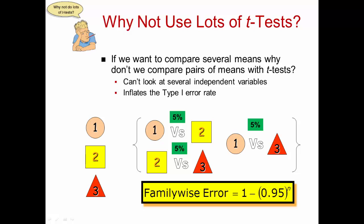We can work that out with a calculation. Say we have three different groups — group 1, group 2, group 3 — and we want to compare all of these. So we're comparing group 1 versus group 2 in a t-test, then group 2 versus group 3, and then group 1 versus group 3. But you have 5% for each time. When we combine those, we find what we call a family-wise error rate.